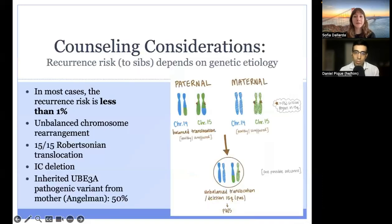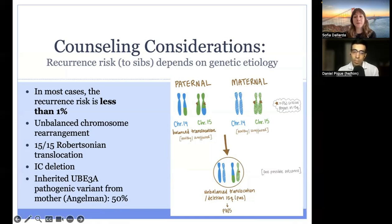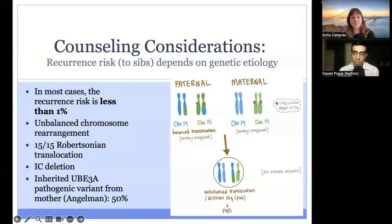An important counseling consideration is recurrence risk to siblings. Most cases of both Prader-Willi syndrome and Angelman syndrome are de novo, so recurrence risk to siblings is usually less than 1%. However, it is possible that an unaffected parent could harbor a genetic change resulting in either condition in their child. In those cases, recurrence risk to siblings is higher and depends on the specific genetic etiology. For example, a father with a de novo balanced translocation involving chromosome 15 could have an offspring who inherits an unbalanced translocation involving a deletion of the Prader-Willi critical region on the paternal allele, resulting in Prader-Willi syndrome — with an empirical recurrence risk of up to 25%.